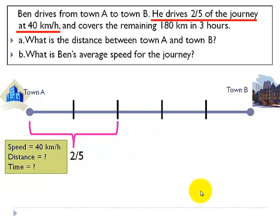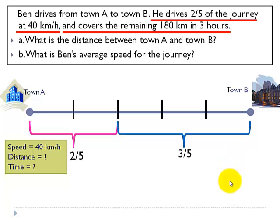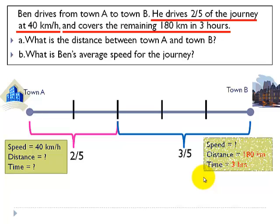And covers the remaining 180 km in three hours. The remaining 180 km is the three parts, so that's three fifths of the journey. We know that we don't know the speed, but we know the distance is 180 km and the time taken is three hours for the journey. We also know that as long as we know two of the quantities like distance and time, then we can find speed.